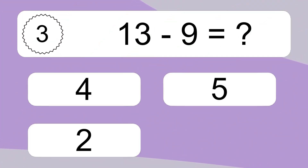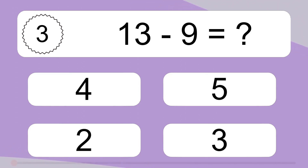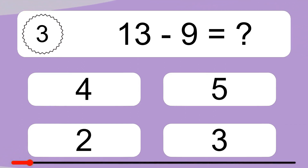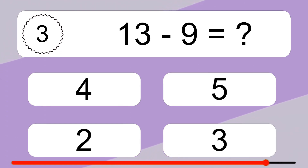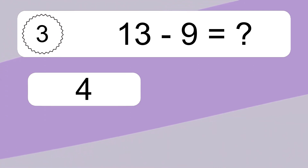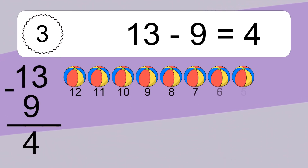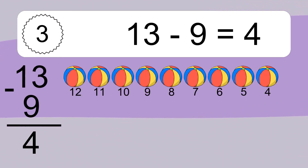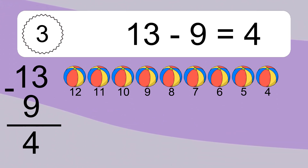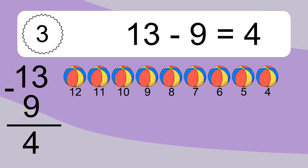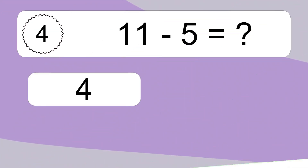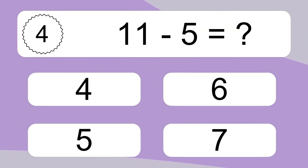13 minus 9 equals what? 13 minus 9 equals 4. Let's count it: 12, 11, 10, 9, 8, 7, 6, 5, 4.